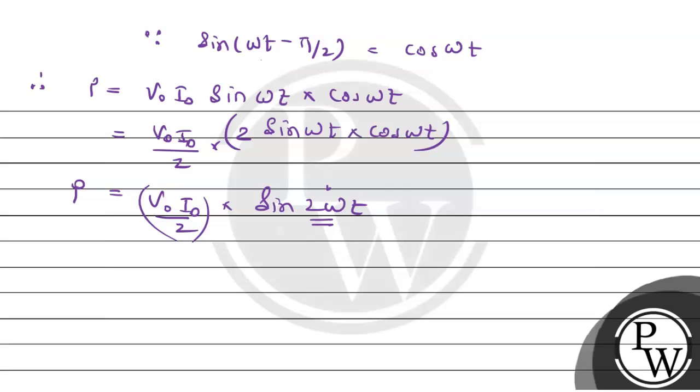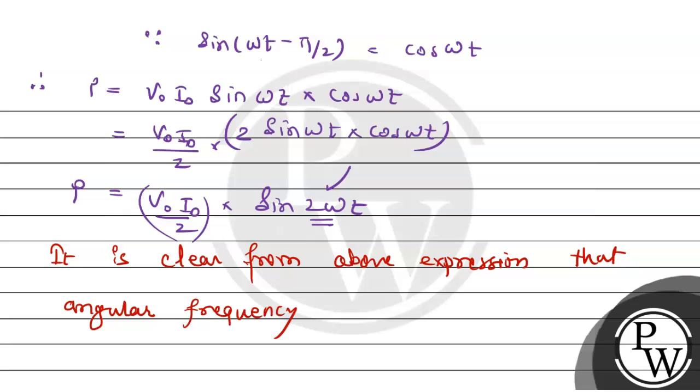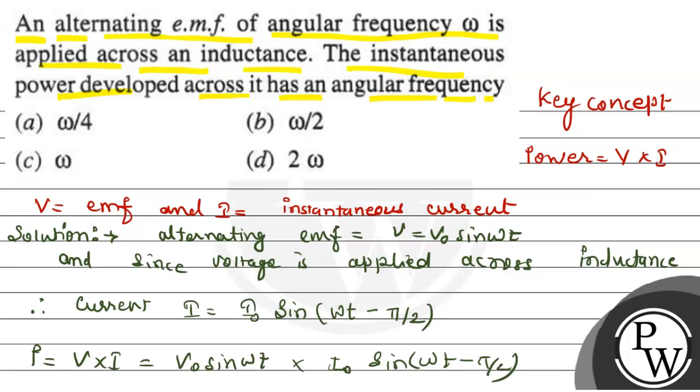But if angular frequency is compared, it is 2 omega. So the conclusion we have, it is clear from the above expression that instantaneous power has angular frequency equals to 2 omega. Let's see which option is correct. So option d is the right option. I hope you understood it well. Best of luck, thank you.